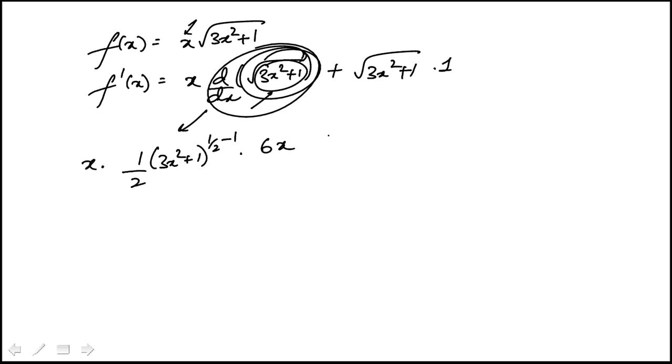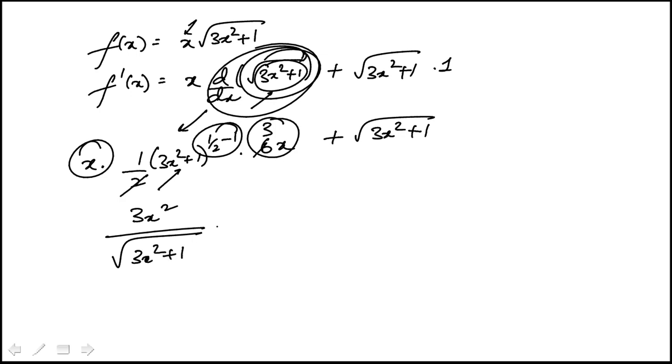We still have the x here, and so this simplifies. Because I get 3x squared, these pieces, and then this goes in the denominator because this would be a minus half. So that is 3x squared plus 1.